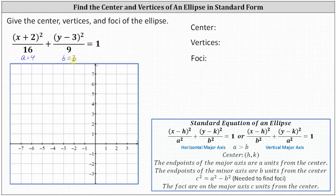Now let's go ahead and find the center of the ellipse. Because we have the square of x plus two, the x-coordinate of the center is negative two. And because we have the square of y minus three, the y-coordinate of the center is positive three.